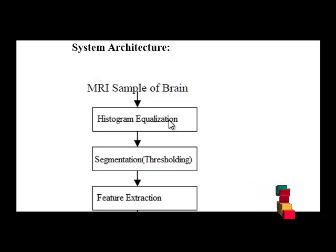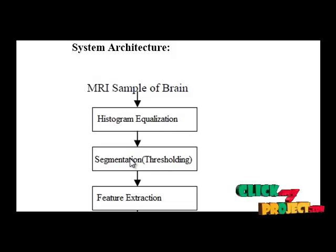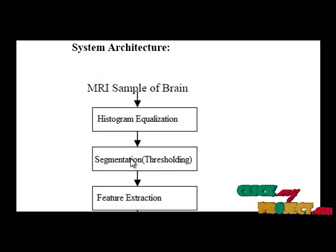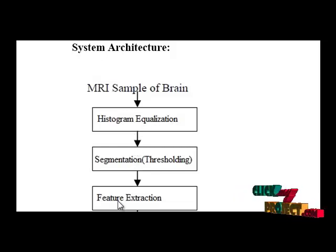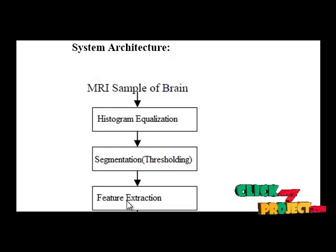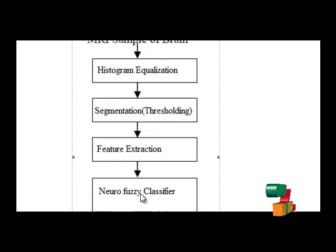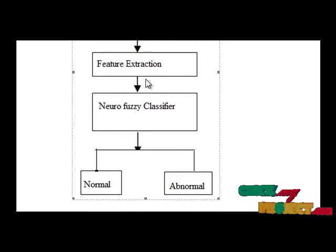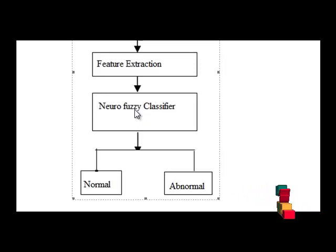Then the enhanced image is passed for segmentation. For segmenting the image, we are using the global thresholding method. Then we extract the tumor portion, and the enhanced image is passed for feature extraction. For feature extraction, we are using GLCM to extract texture features from the MRI brain image. The extracted features are then labeled and learned through the Neurophasic classifier.